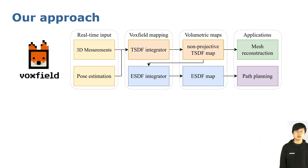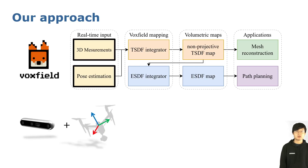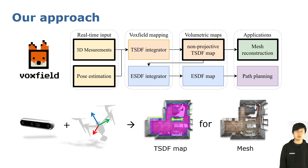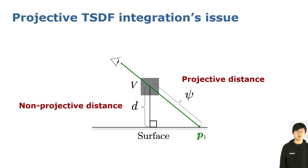We proceed now to briefly explain our approach, VoxField. The input to the system is the 3D measurement and robot pose. VoxField firstly builds a non-projective TSDF map from the inputs, and then reconstructs the 3D mesh from the TSDF map using the marching cubes algorithm. Our main improvement over the previous method is the non-projective TSDF integrator.